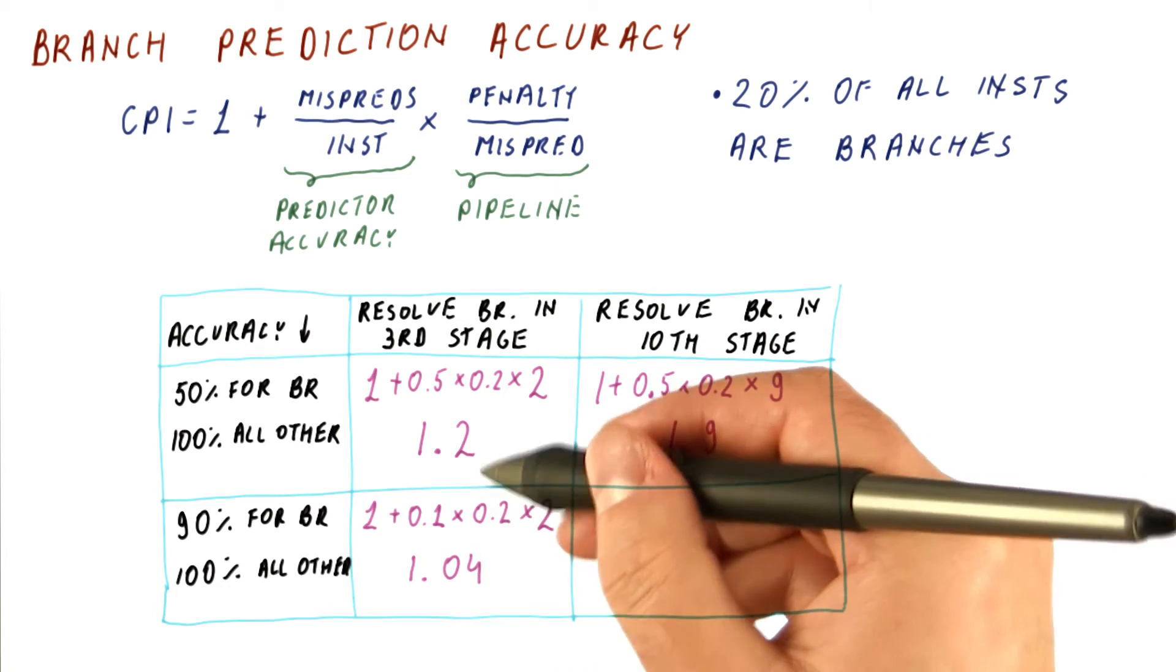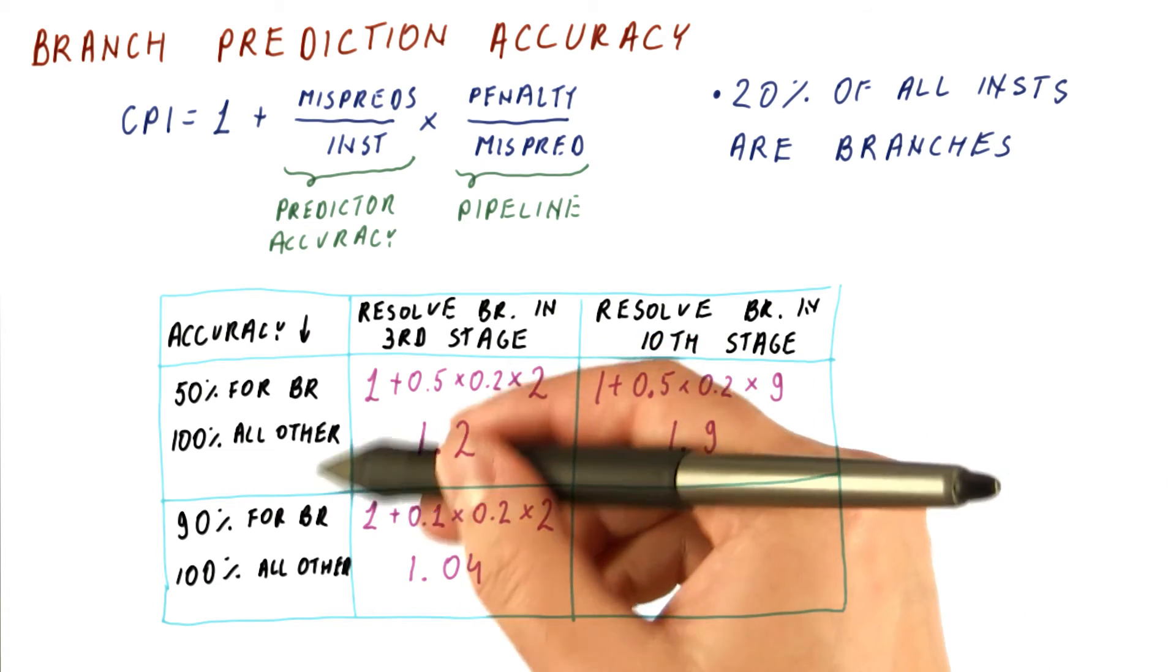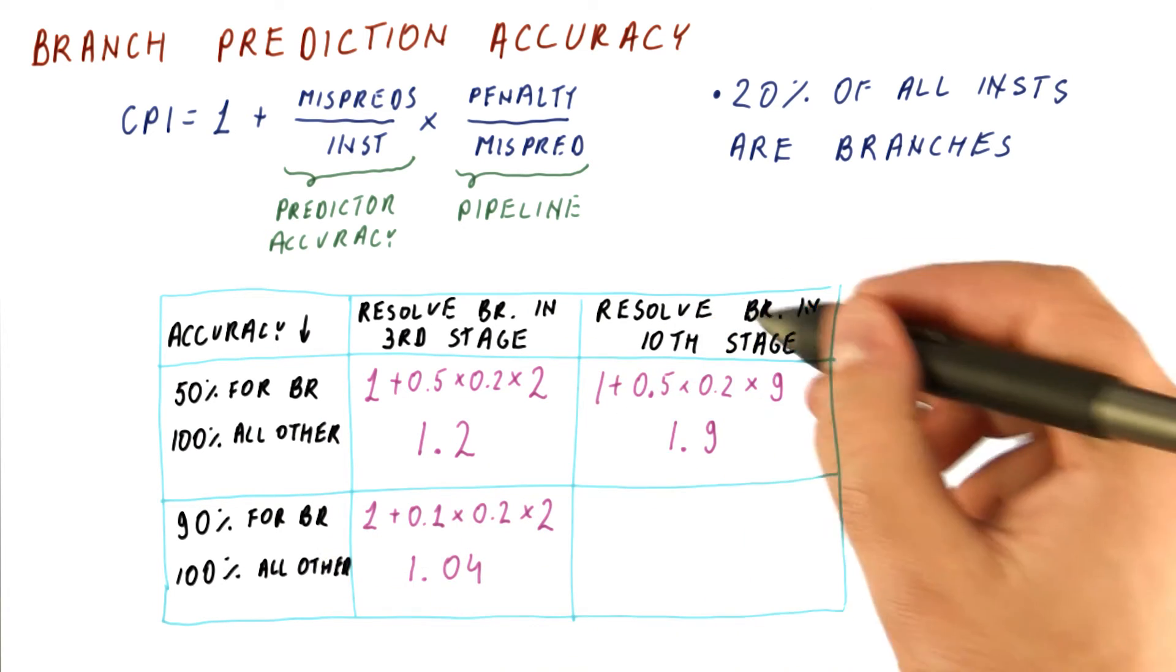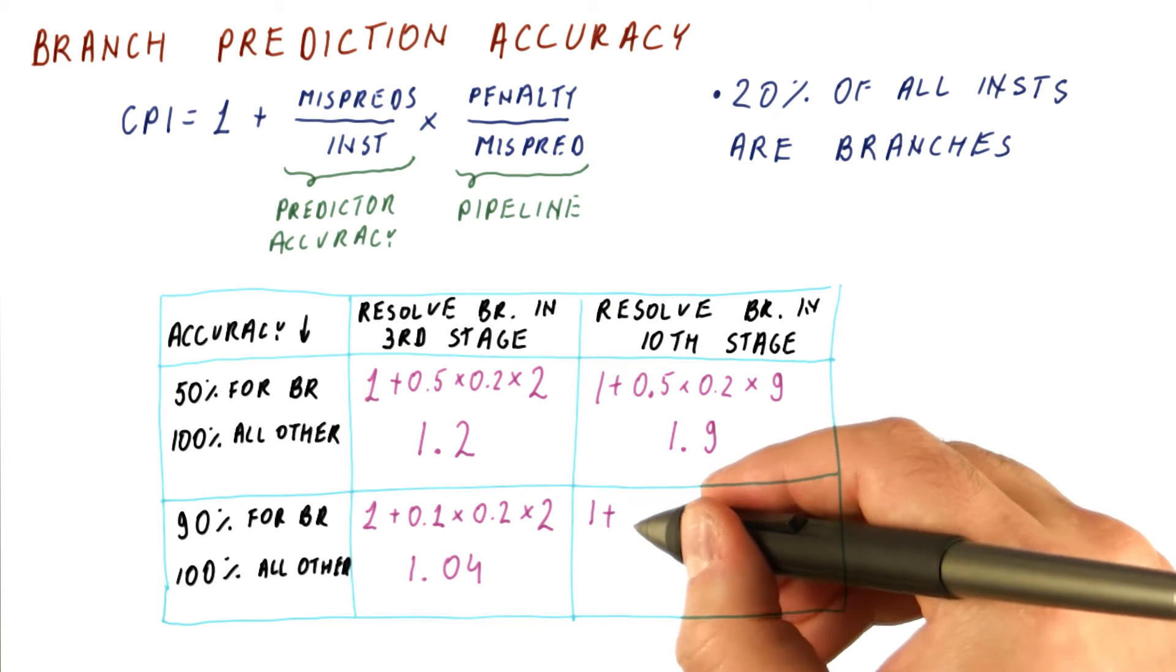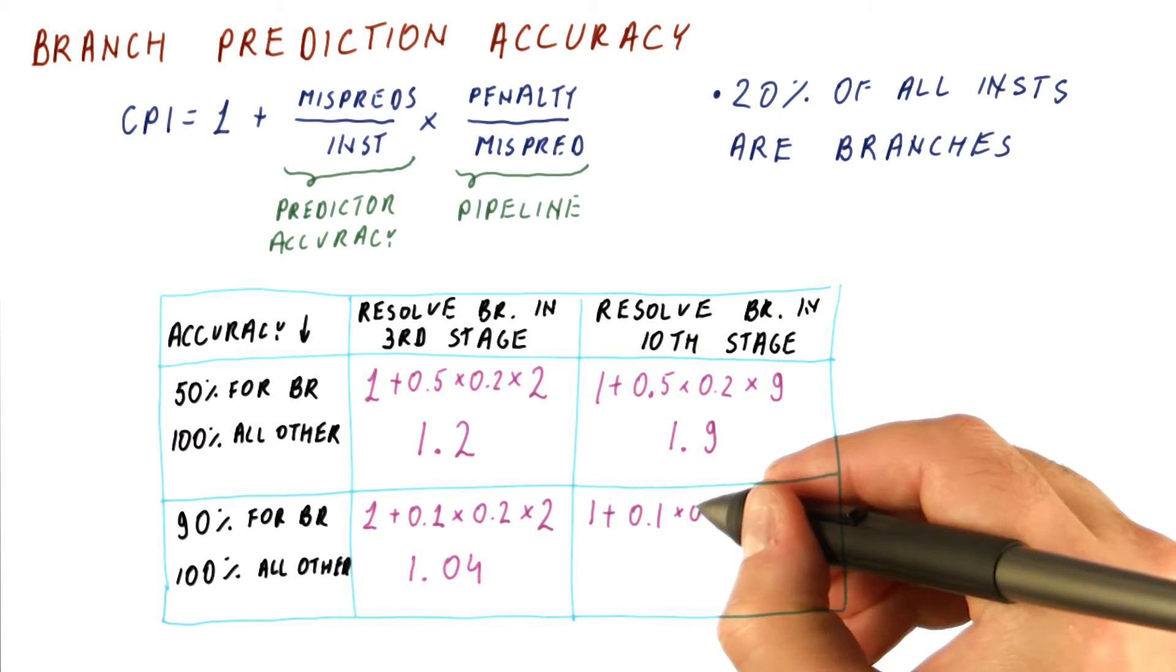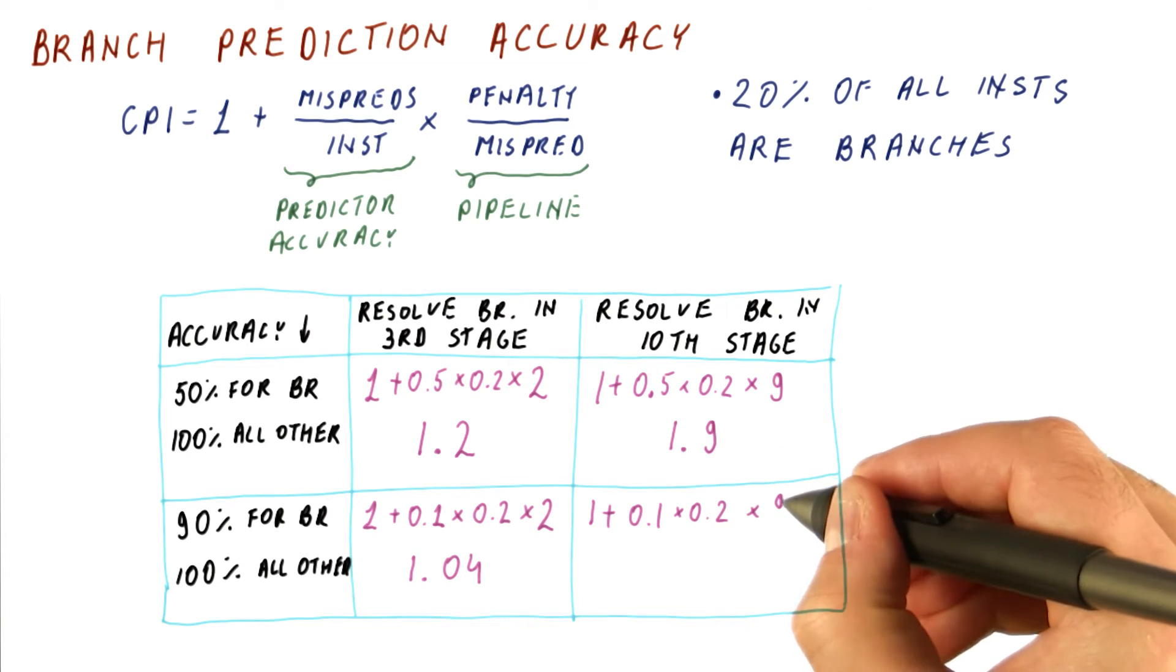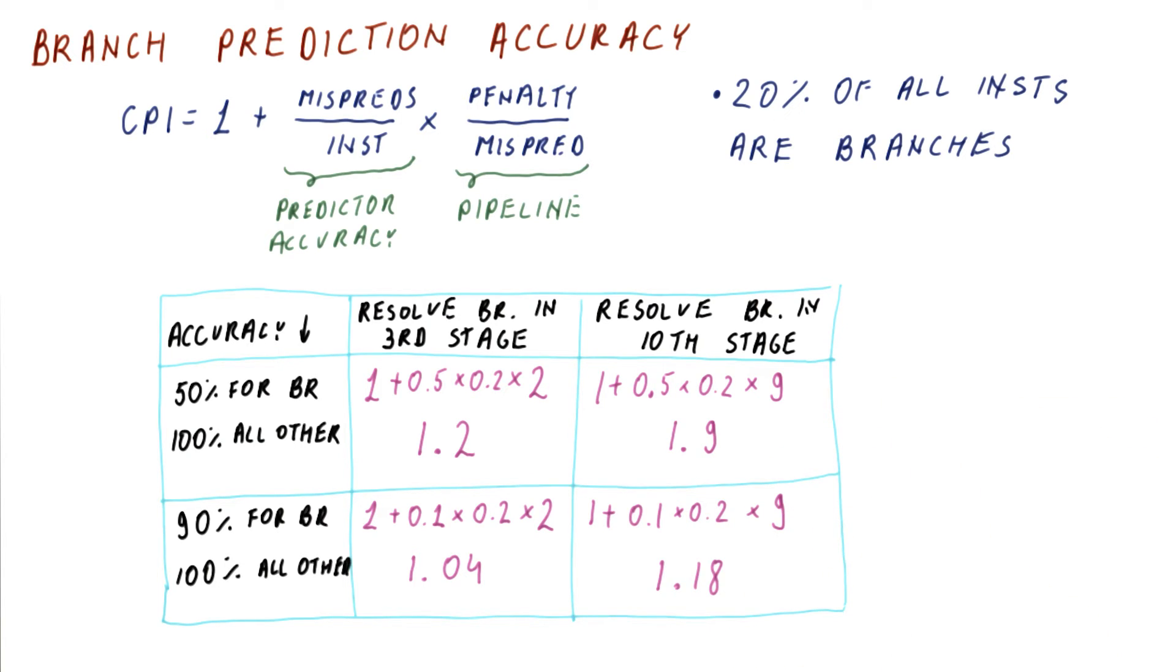So this is a significant improvement from a more accurate predictor. Let's look now at this processor. Here we have 1 plus 0.1 times 0.2 times now 9. And when we compute this, we get 1.18.